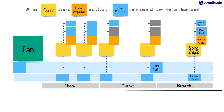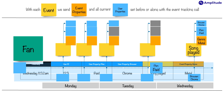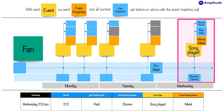Now, if this concept is foreign, one way to think about this is with a familiar idea: a row in a spreadsheet. Imagine you have a row for each event. What are the columns? Well, we record the time, we record something to identify the user, we record the user property plan and the value paid, we record the user property browser and the value Chrome, we record the event type song played, and we record the event property genre and the value metal.